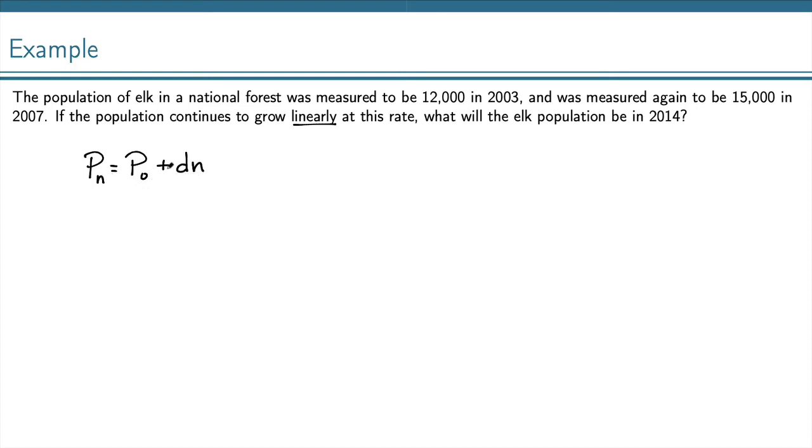Using this formula, we can plug in the information that we have. So, first of all, this 12,000 in the year 2003, I'm going to measure P0 in the year 2000, just because I want it to be easy numbers to work with. So I'm going to let n equals 0 be the year 2000.